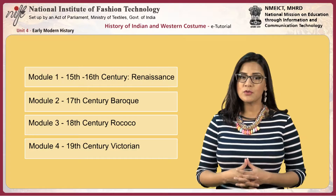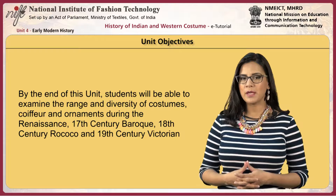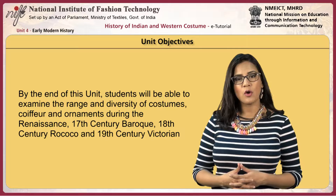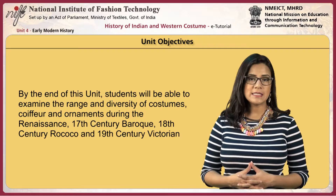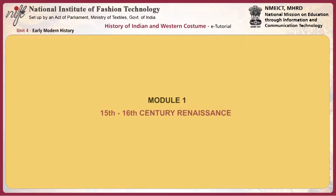By the end of this unit, students will be able to examine the range and diversity of costumes, coifs, and ornaments during the Renaissance, 17th century Baroque, 18th century Rococo, and 19th century Victorian periods. The first module focuses on the Renaissance between the 15th and 16th century.